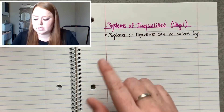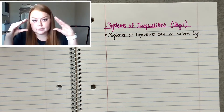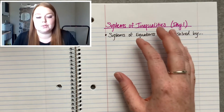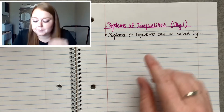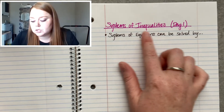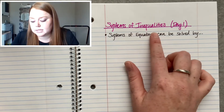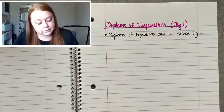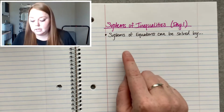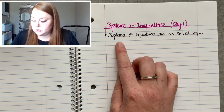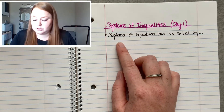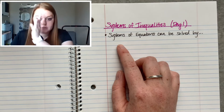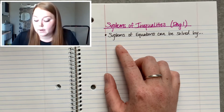Remember, inequalities are your less than, greater than, less than or equal to, greater than or equal to symbols — your little alligators, right? So we're going to practice that today and we're going to split this up into two lessons. Hopefully today is nice and kind of light. But there are a few things I want you to add to your notes just so your brain can organize systems of equations versus systems of inequalities.